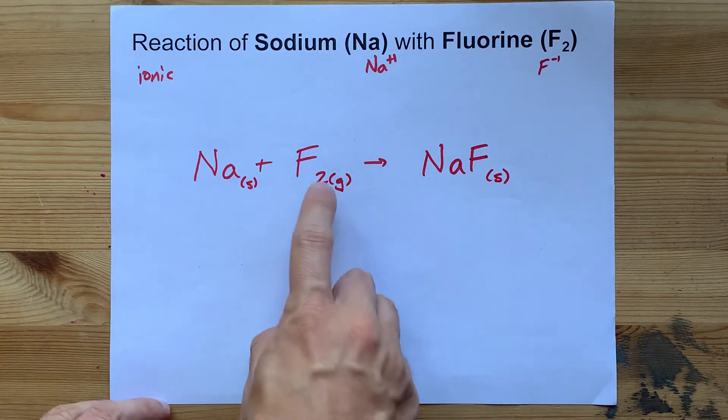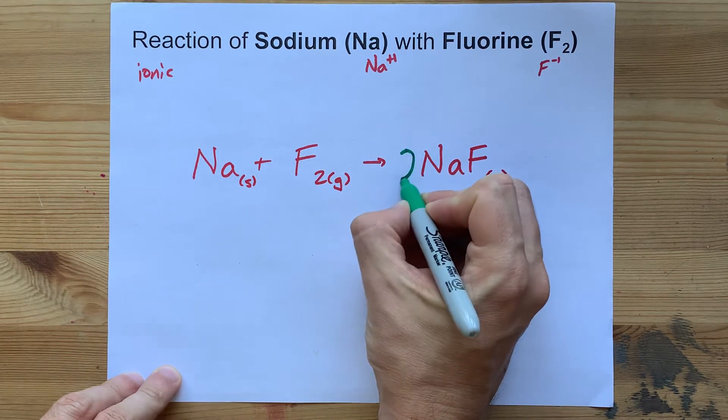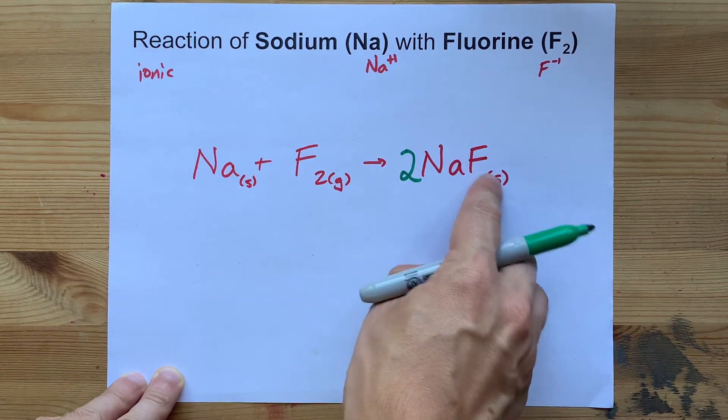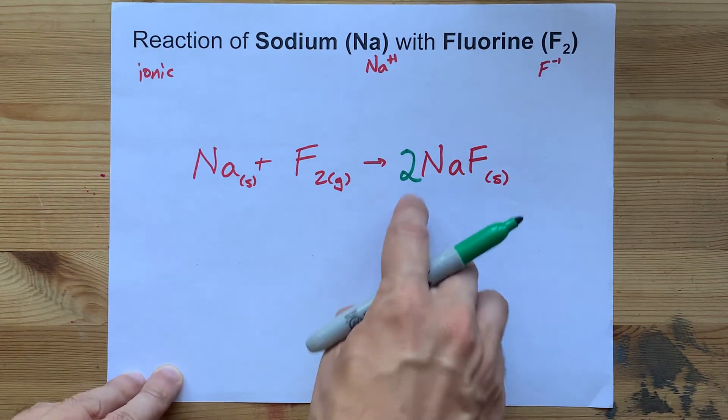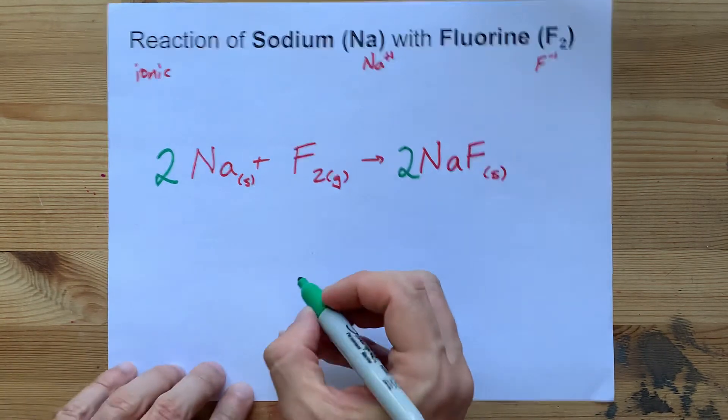Now to balance this, we have two fluorines on the left side of the arrow. We need two fluorines on the right side of the arrow. I put a two as a coefficient because I can't change the subscript. Now I have two sodiums on the right, so I need two sodiums on the left, and I am done.